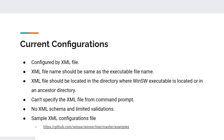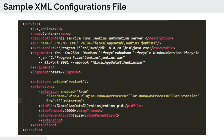So that's how configuration management was at the start of this project. If you're interested in finding an example XML configuration file, you can find it at the given link. This is how a sample XML configuration file looks like in Windows Service Wrapper. There are a lot of configurations apart from this — this image contains only a few of them.